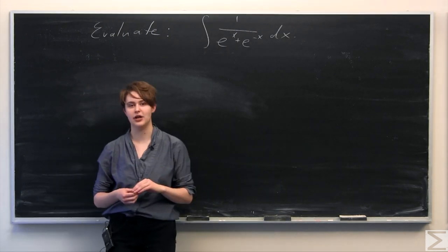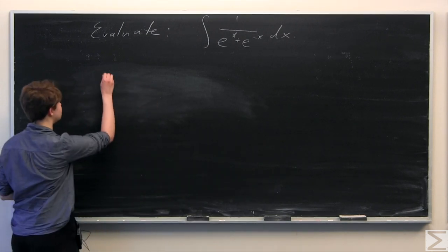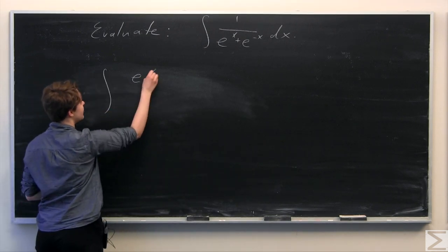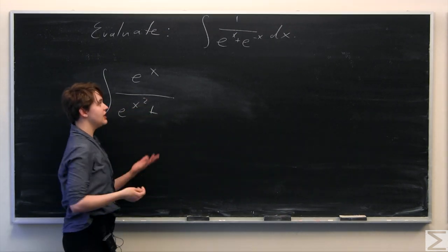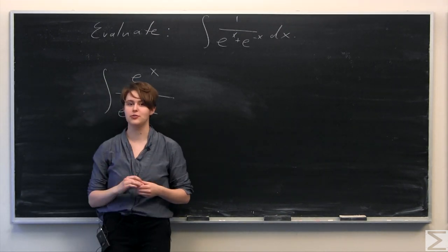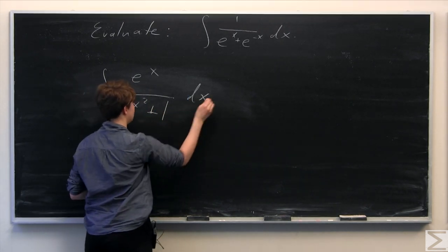In this case, I'm going to multiply the numerator and the denominator by e to the x. So we have e to the x all over e to the x squared plus, and then e to the negative x times e to the x is just 1. So e to the x squared plus 1 in the denominator and dx here.